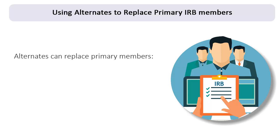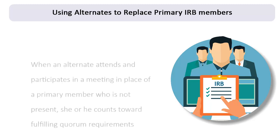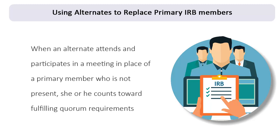In order to ensure that full board meetings can be convened when one or more of the primary members are unavailable, or to meet a need for a specific area of expertise, IRBs often include individuals on the IRB roster to serve as alternates to the primary members. When an alternate attends and participates in a meeting in place of a primary member who is not present, she or he counts toward fulfilling quorum requirements.